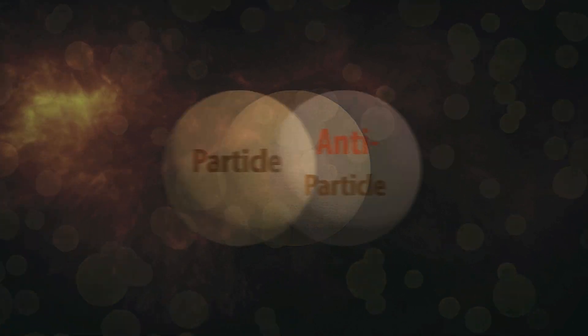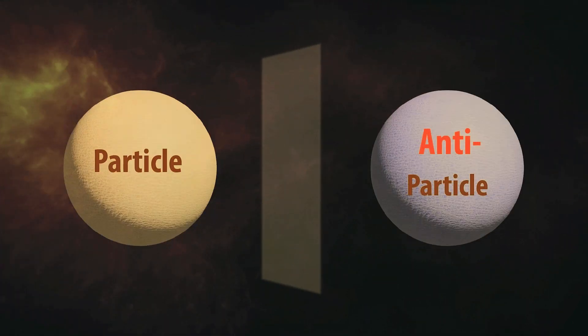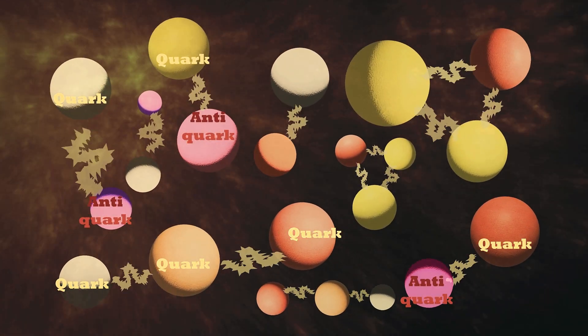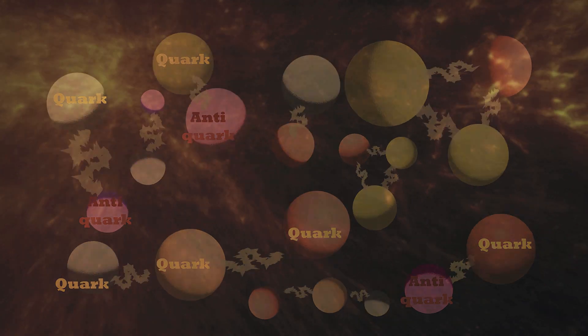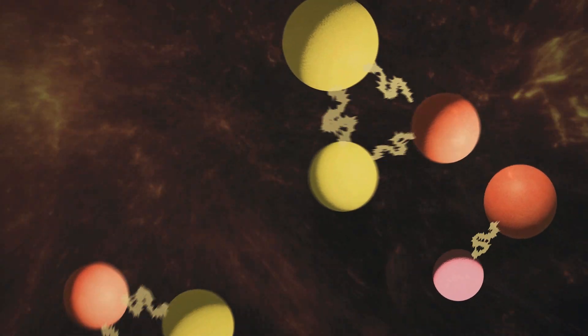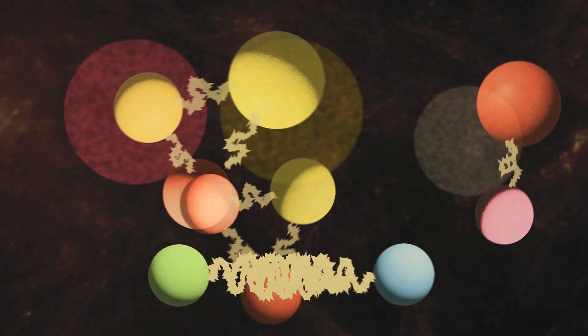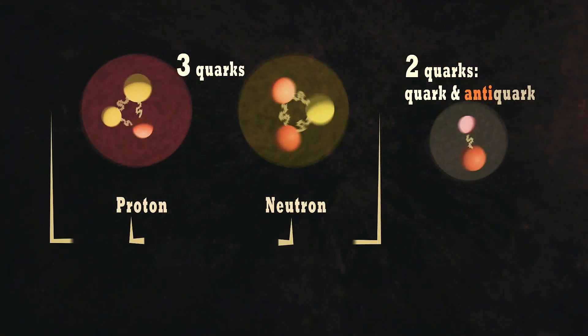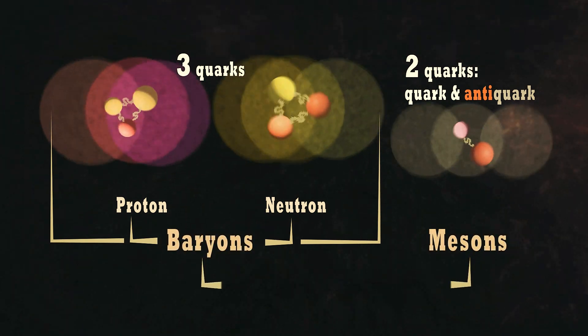Every type of particle is associated with an antiparticle of the same mass with the opposite charge. Consequently, an uncharged particle is its own antiparticle. Particle-antiparticle pairs can annihilate each other to give up energy, and get produced again from their energy.